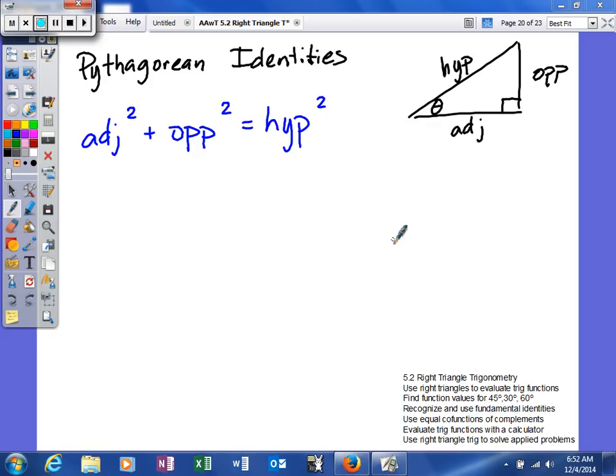Normally you do A squared plus B squared is equal to C squared, or leg squared plus leg squared is equal to hypotenuse squared. But once we set up our trig triangle, our right triangle, we can actually use adjacent, opposite, and hypotenuse.